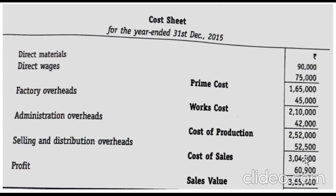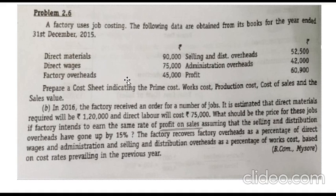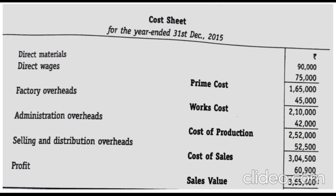Now we find profit. The question gives profit directly as 60,900. Cost plus profit gives sales: 3,04,500 plus 60,900 equals sales of 3,65,400.